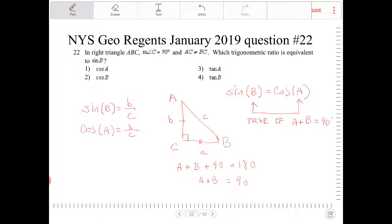So to answer this question, which ratio is equivalent to sine of B, we're going to say it's going to be cosine of A, and that's option one.